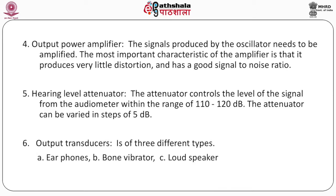Next, the output power amplifier. The signals produced by the oscillator need to be amplified. The most important characteristic of the amplifier is that it produces very little distortion and has a good signal-to-noise ratio. Next, the hearing level attenuator. The attenuator controls the level of signal from the audiometer within a range of minus 10 to 120 decibel. The attenuator can be varied in steps of 5 decibel.